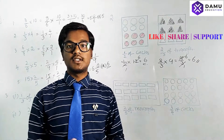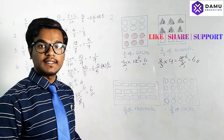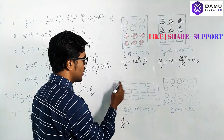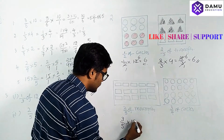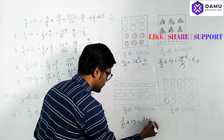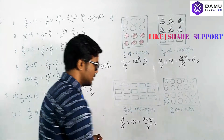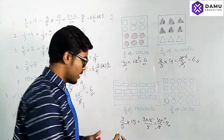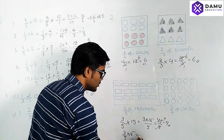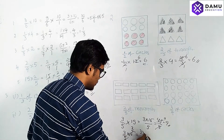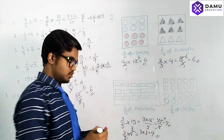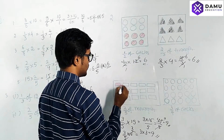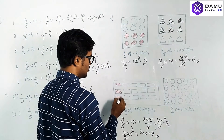Next: 3/5 of rectangles. 'Of' means multiplication. There are 3 rows of 5 rectangles, giving 15 rectangles. 3 × 15 = 45, divided by 5 = 9. Alternatively, 3/5 × 15 = 3 × 3 = 9. So 9 rectangles need to be shaded. Count out any 9 rectangles — one, two, three... shading them one by one.